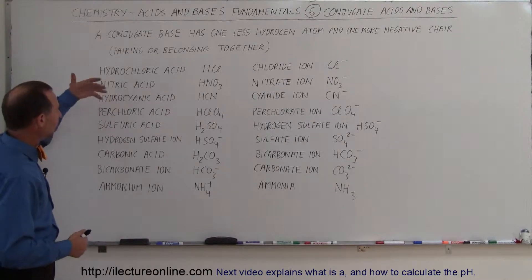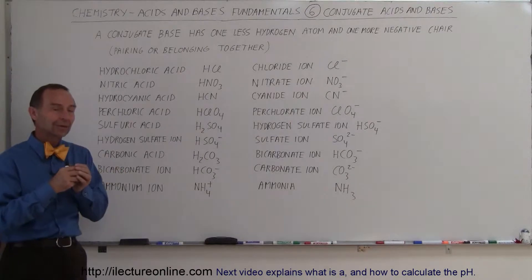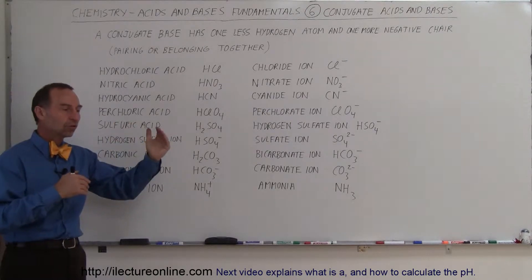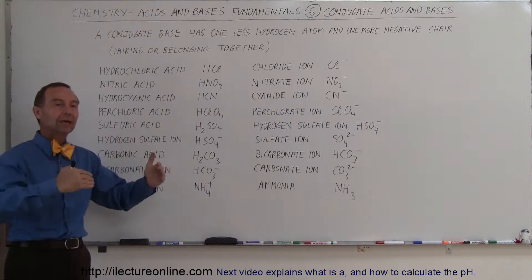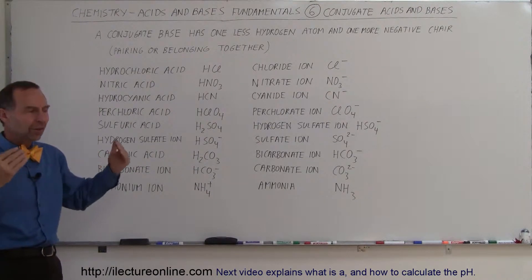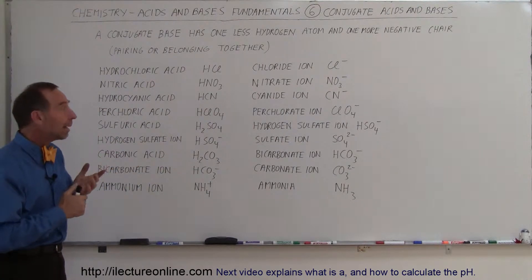What do we mean by conjugate acids and bases? The word conjugate means pairing up or belonging together. So there's an associated acid to a base or an associated base to an acid, and that's why they call them conjugate acids and bases.